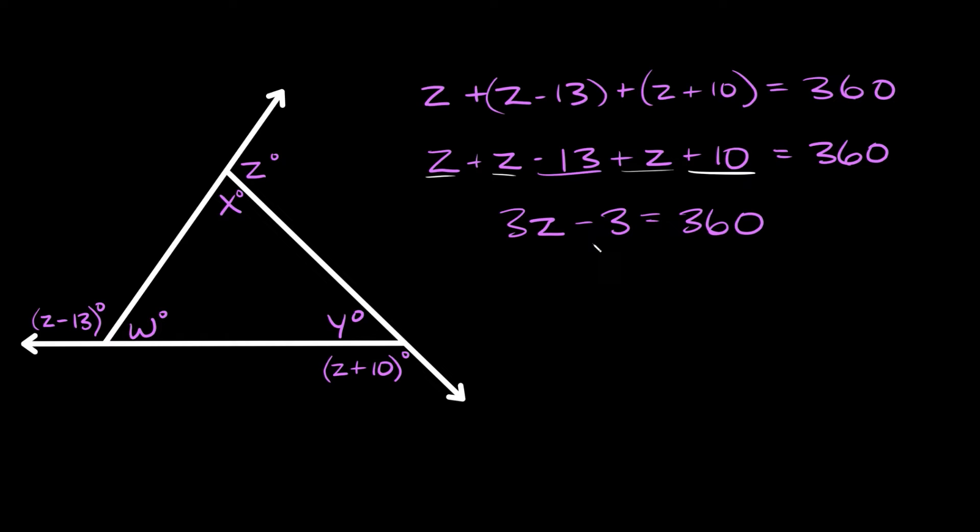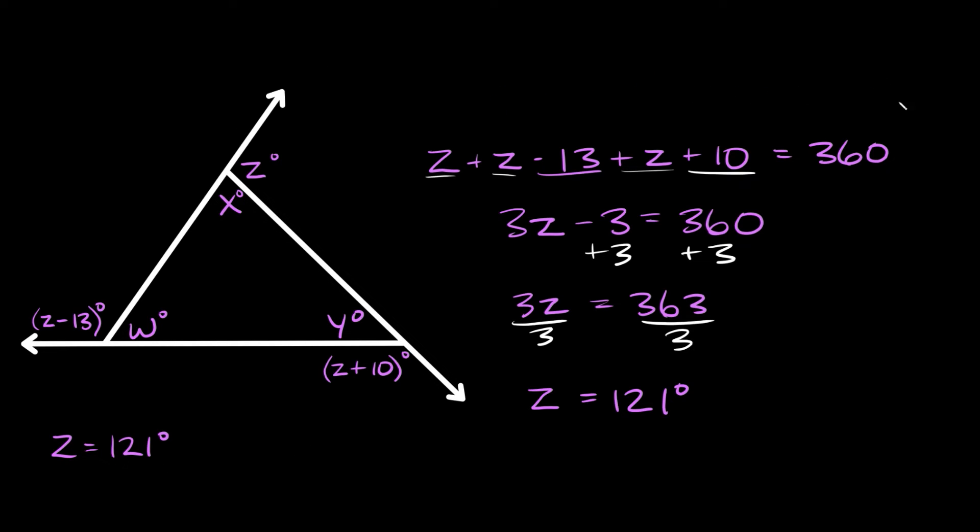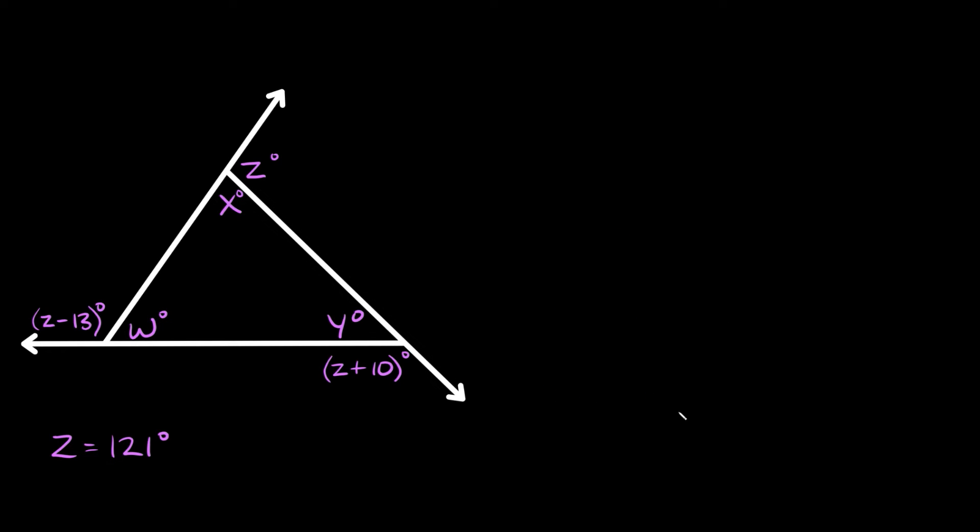So then here we could just add three to both sides. So we get that three z is equal to 363. Divide both sides by three. So then here we get that z is equal to 121 degrees. And I'm going to rewrite it over here just to make some room. So we know that z is equal to 121. And I'm going to delete this stuff just to make some room for the rest of our work.